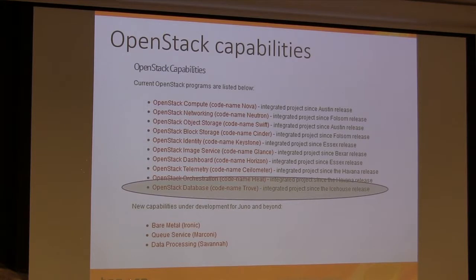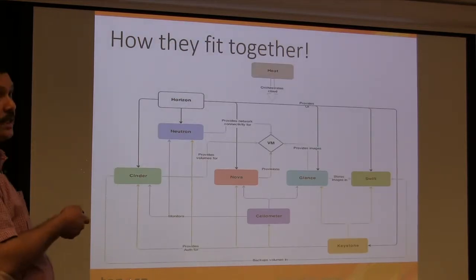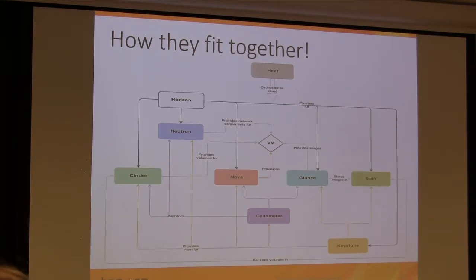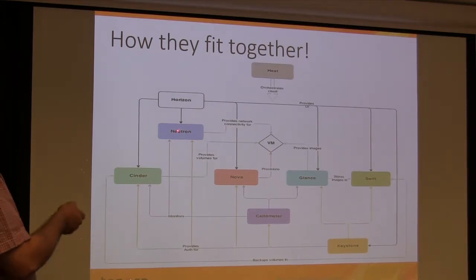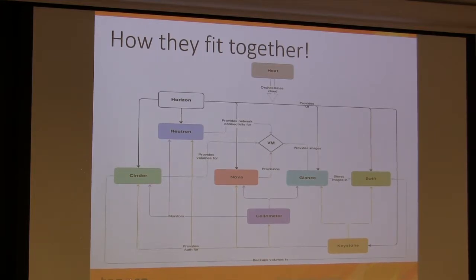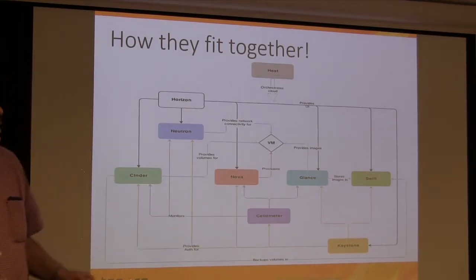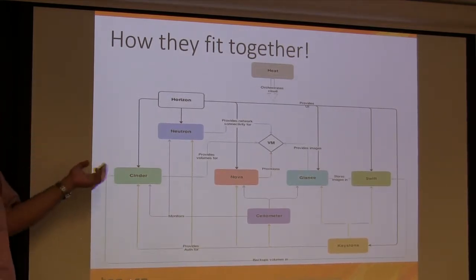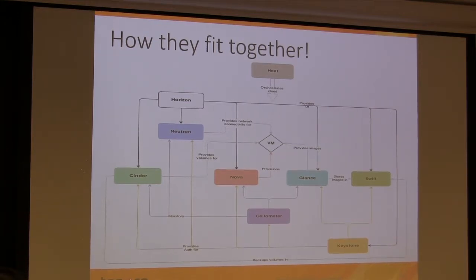The projects we really need to bother about are Nova, Neutron, Cinder and Swift, Glance, and maybe Heat. Everything in OpenStack is about a VM — starting up a VM and the relationship between the service and the VM. Horizon provides the UI. Neutron provides network connectivity. Nova provisions the VMs. Glance is where you get your images. Cinder is your block storage. Swift is your object store and also where images are stored. Keystone is identity management.